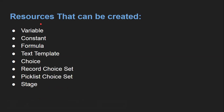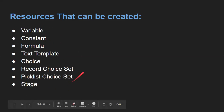These are the resources that can be created in Flow Builder while building any flow. You can create Variables, Constants, Formula, Text Template, Choice, Record Choice Set, Picklist Choice Set, and Stage resources.